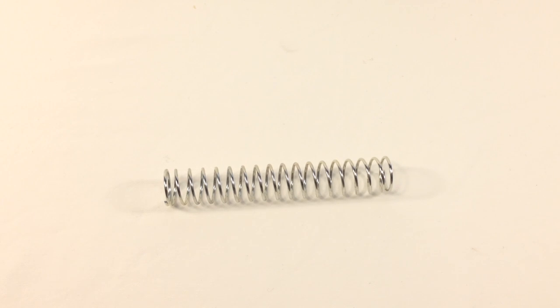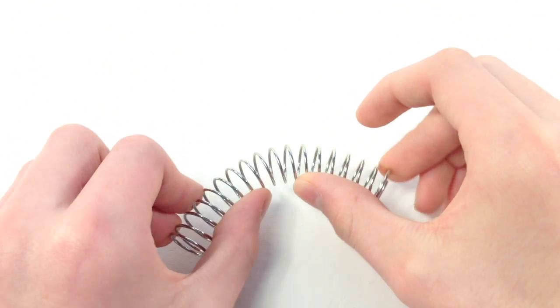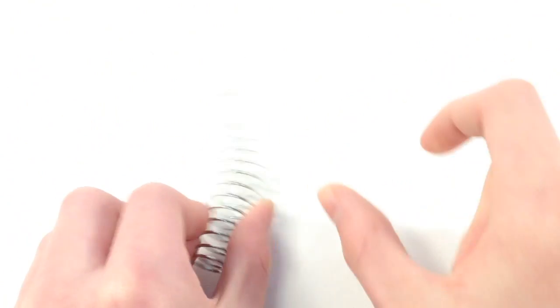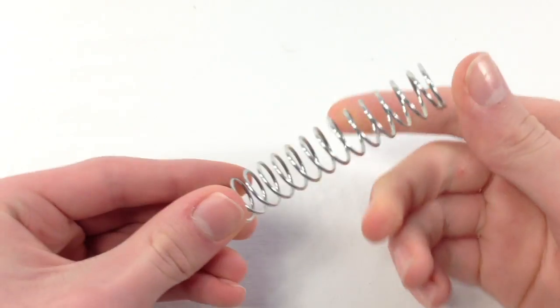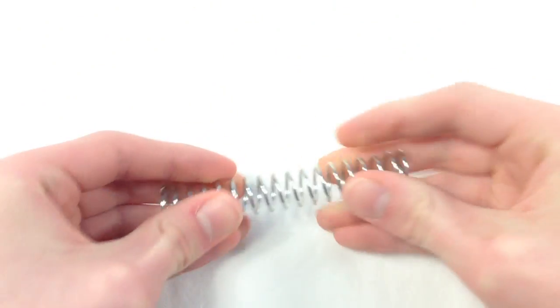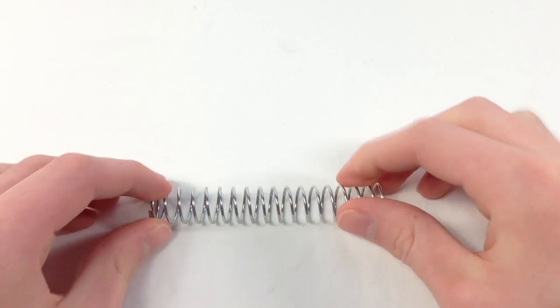For example, this spring. When I try and bend it, it goes back to its original shape. So no matter which way I twist it or pull it, it's going to go back to the way it was before.